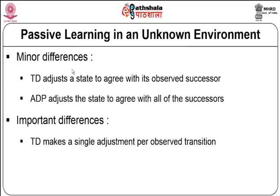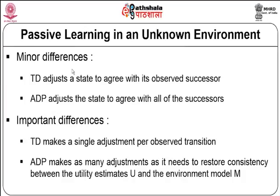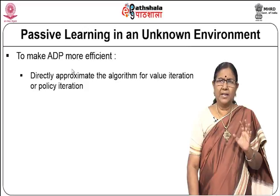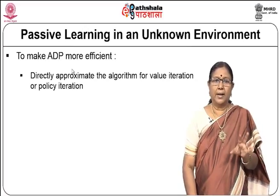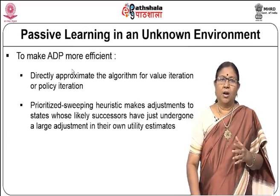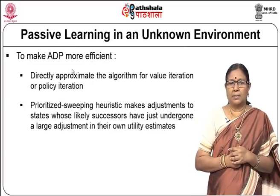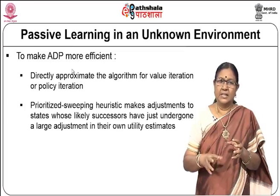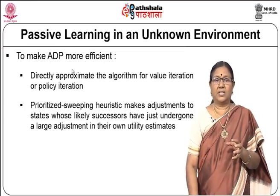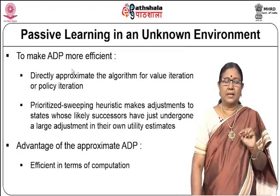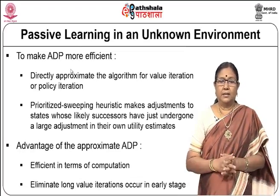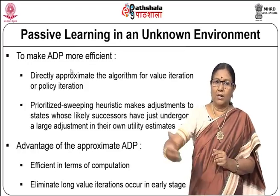TD makes a single adjustment per observed transition, while ADP makes as many adjustments as needed to restore consistency between the utility estimates U and the environment model M. To make ADP more efficient, you can directly approximate value iteration or policy iteration and use prioritized sweeping — a heuristic that makes adjustments to states whose likely successors have just undergone the largest adjustment. This eliminates long value iterations that occur in the early stages.